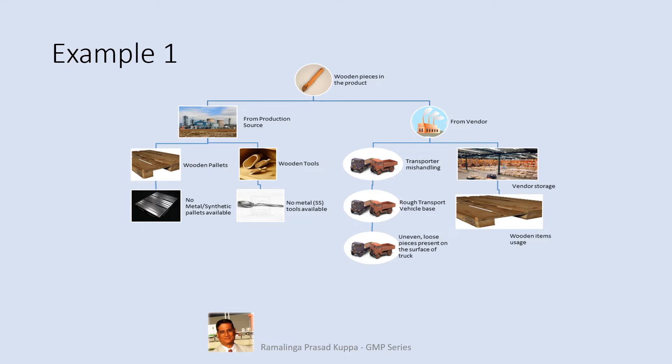Another cause for wooden piece contamination is the transportation trucks. Contamination is possible if the loading surface of the truck is rough and damaged — wooden pieces could pierce into the containers. This possibility is higher when the final market package is in HDPE bags and the bags are dragged across the rough surface of the truck while loading. The evaluation also establishes that no metallic pellets or scoops were used in manufacturing as additional supportive evidence. Once FTA provides scientific and logical conclusions, CAPA will be easier and more effective.